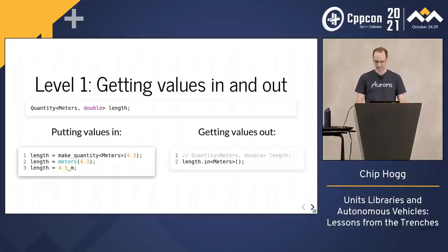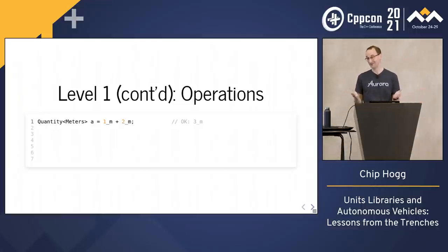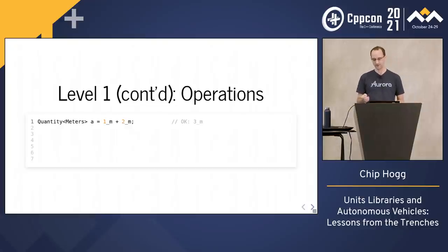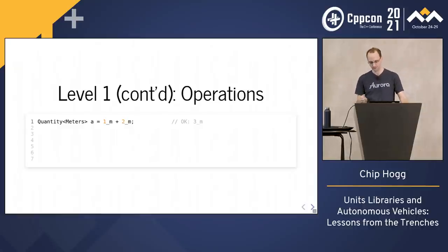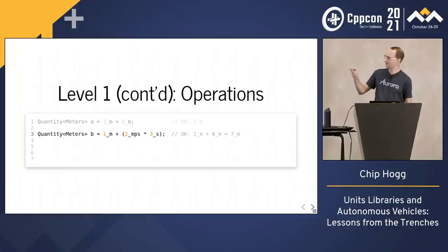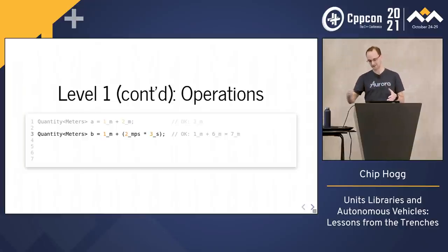What can you do with these quantities? We already know it's always valid to multiply and divide them and raise them to rational powers. Let's consider addition. We can add two quantities of the same unit — no problem. That's true even if we had to do some reasoning to get the unit: two meters per second times three seconds gives us six meters, which we can then add to another quantity of meters. What we definitely can't do is add incompatible quantities — one meter plus one second is just a mistake, and this is always going to be a build error.